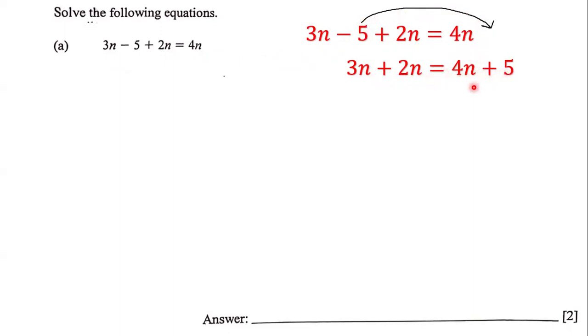Notice we have 4n on the right hand side. We're going to send it over the equal sign to the left hand side. It was a positive 4n; when we send it over it becomes a negative 4n. So we have 3n plus 2n minus 4n equals 5. All of these terms...